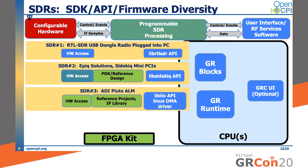Our third example radio, the ADI Pluto, also has an API called LibIIO, and ADI includes Linux DMA and device drivers. On the FPGA that's in the Pluto, there are reference projects and a library of IP blocks. The hardware access in that radio is nearly all from the FPGA — the FPGA talks to the devices, and the host CPU talks to the embedded ARM CPU, which talks to the FPGA.